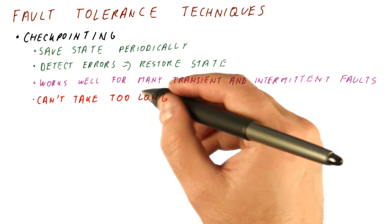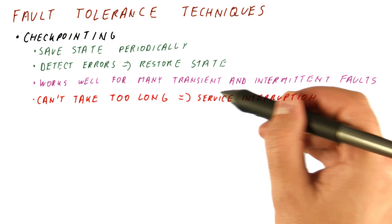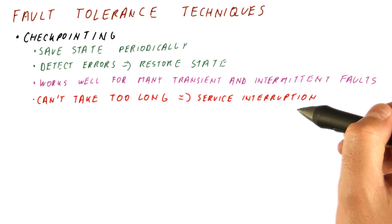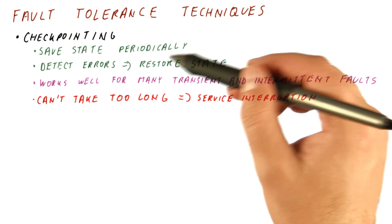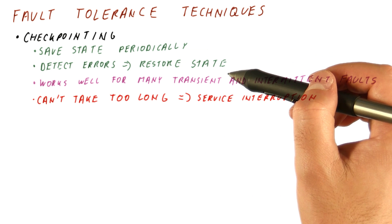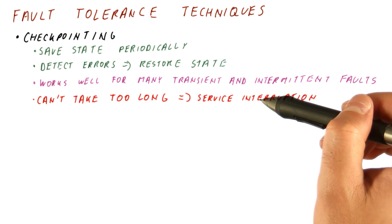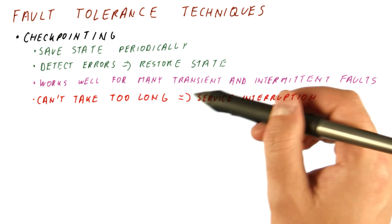If checkpointing takes too long, then this type of recovery has to be treated as service interruption. But if checkpointing, detection, and restoring of the state are very fast, it may be that the promised service is never disrupted.